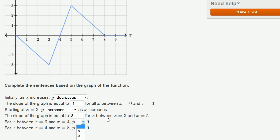For x between x equals 0 and x equals 4, y - let's see. We can pick greater than, less than or equal to, greater than or equal to, or equal. So for x between 0 and 4, y is less than or equal to 0.